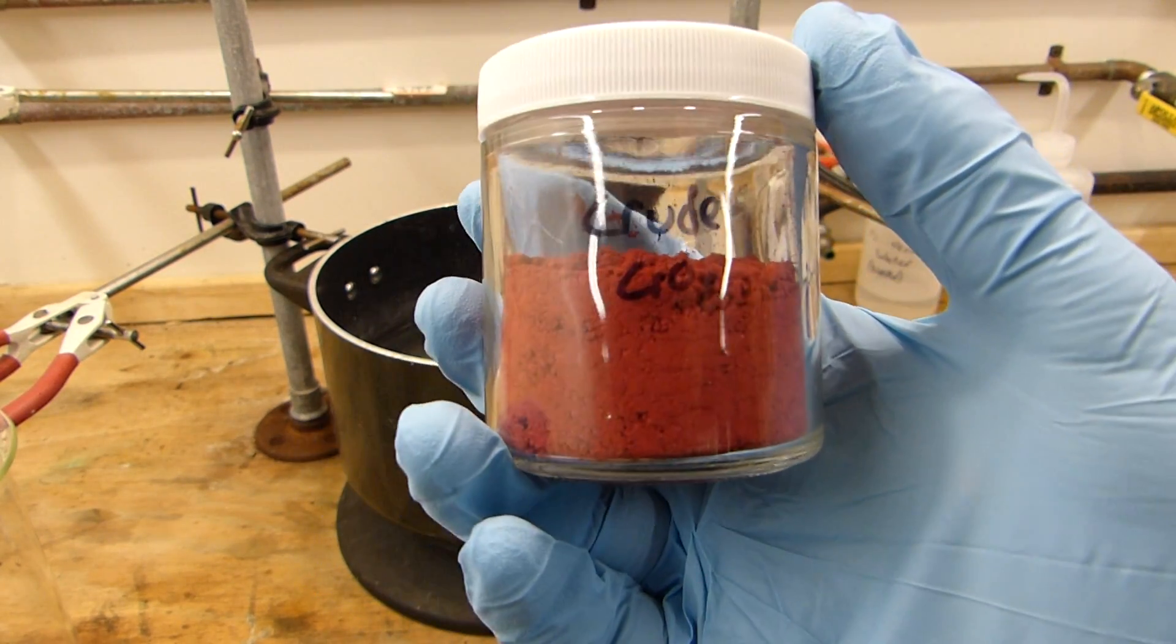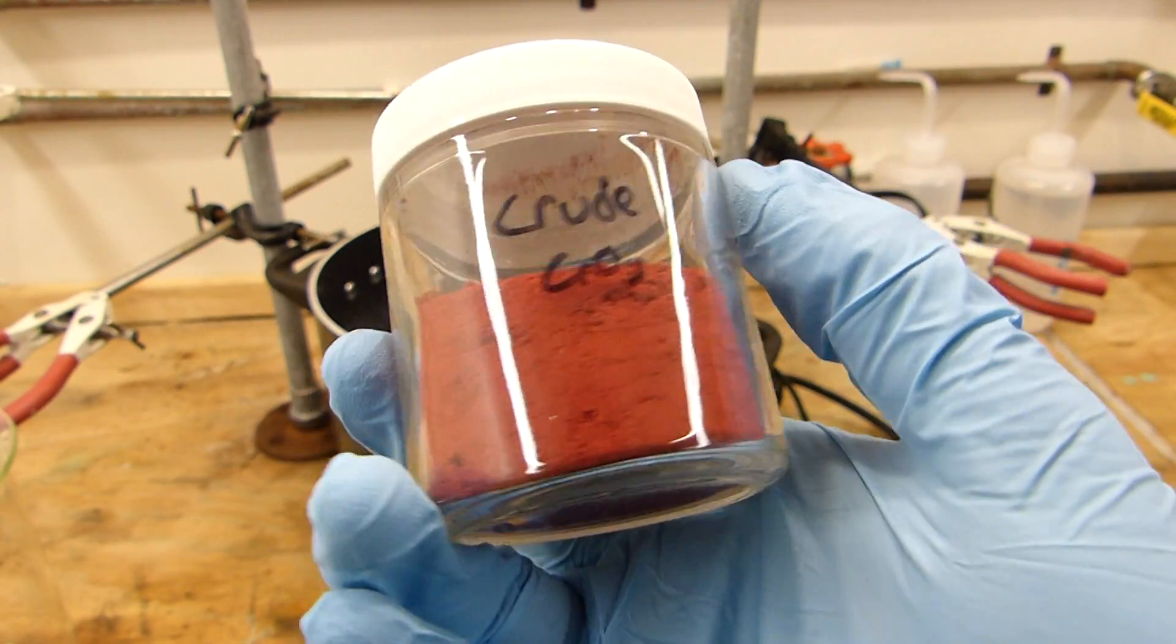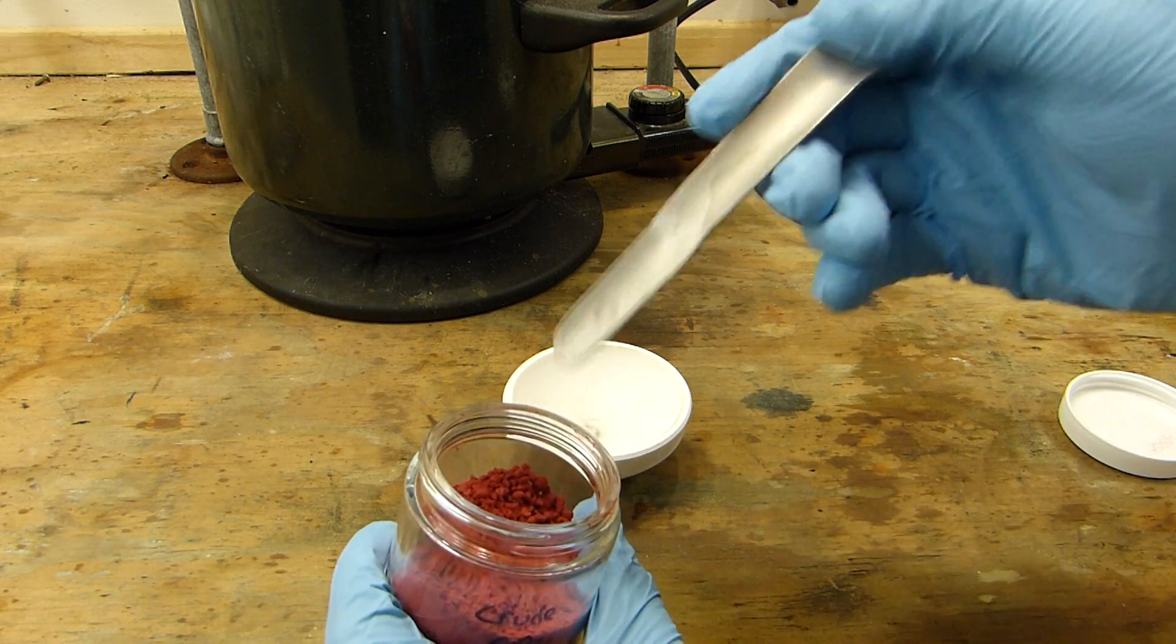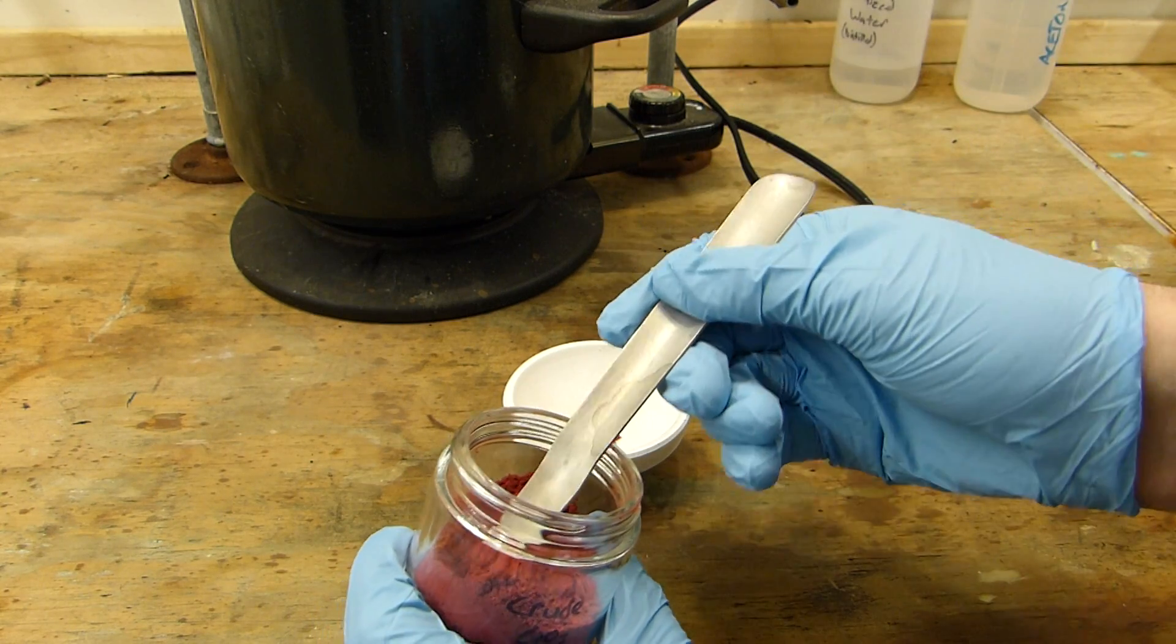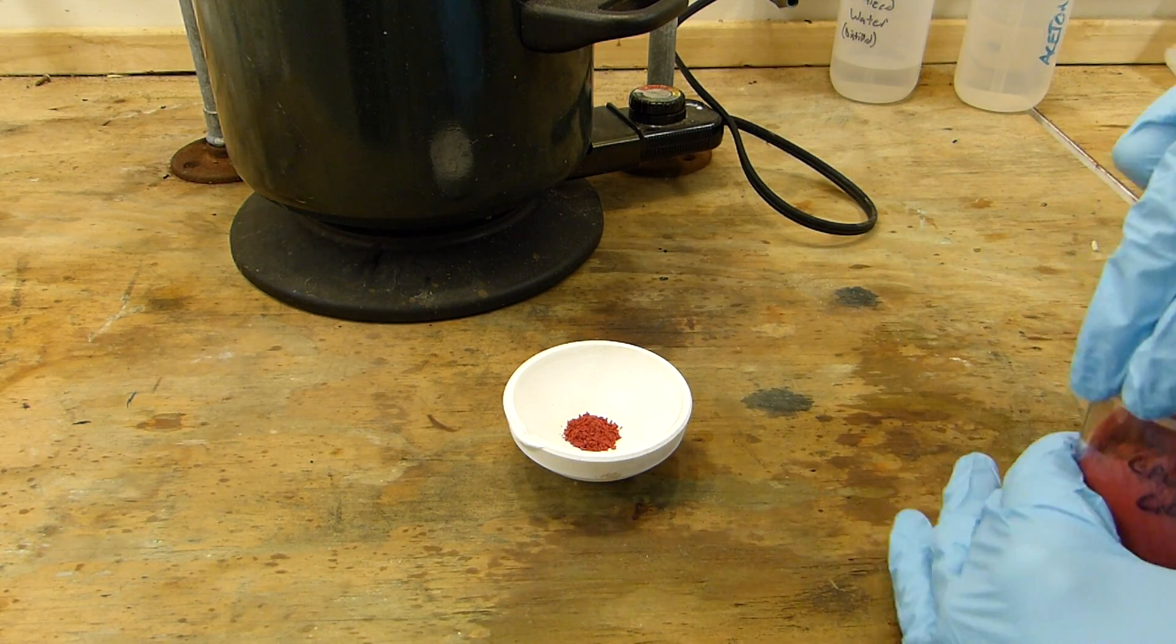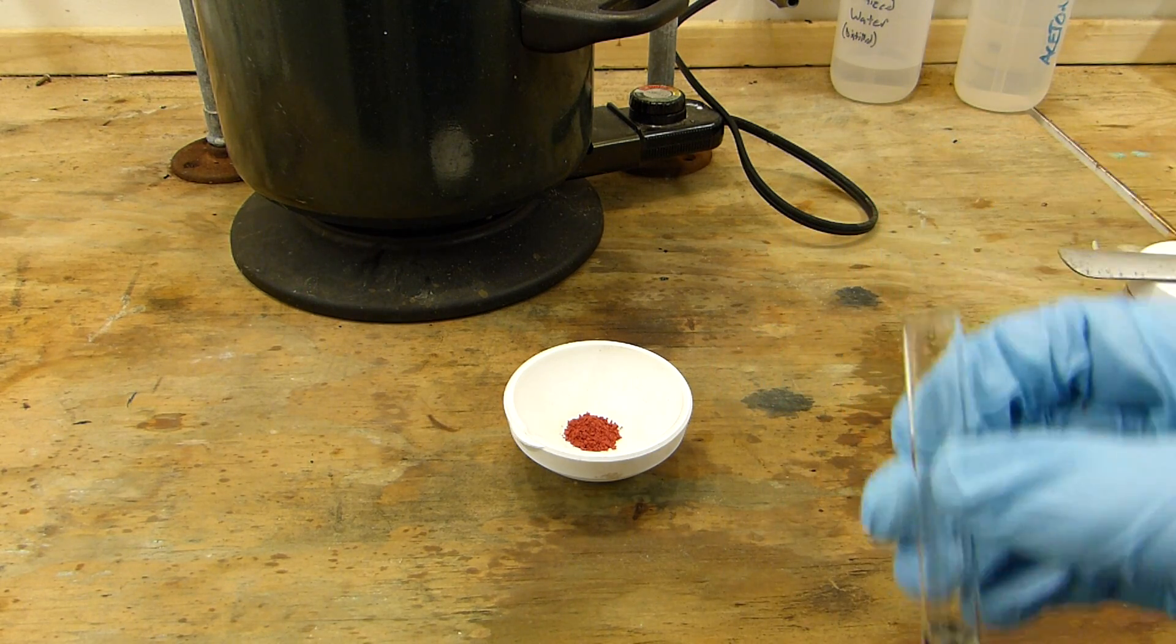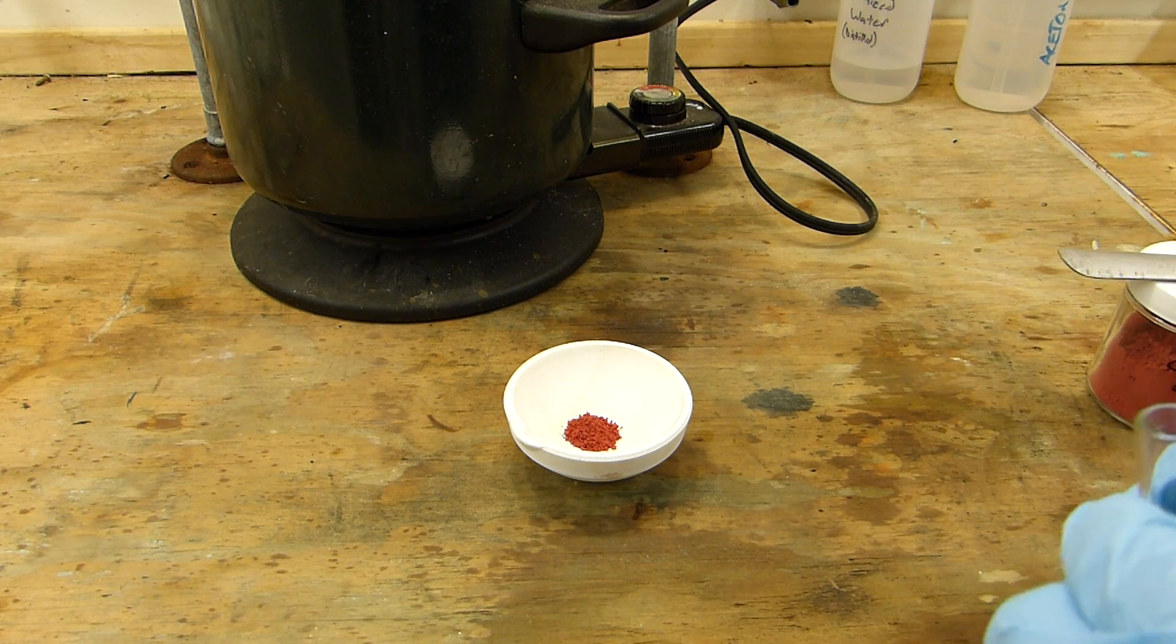I'll do a final demonstration to show the strong oxidizing properties of chromium trioxide. These strong oxidizing properties of chromium trioxide are easily demonstrated by simply placing some in the bottom of the crucible. Get a good amount there. And I have here a test tube with a small amount of methanol in it, and I'm going to pour the methanol onto the chromium trioxide and we'll see what happens.